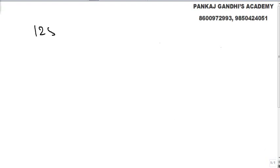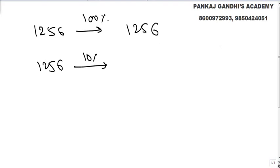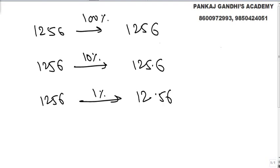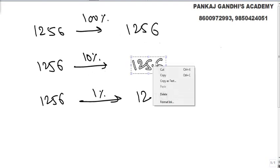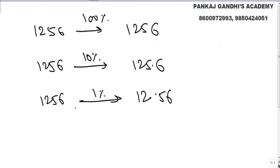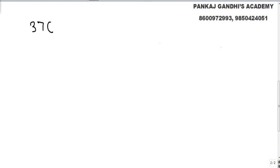Now, if we have to calculate something like 1256 — 100 percent is the same number, 10 percent is one decimal shifted, 1 percent is 12.56, two decimals shifted, and so on. So if I have to calculate 22 percent of 3760, one way is 3760 into 22 by 100 knowing the table of 22.